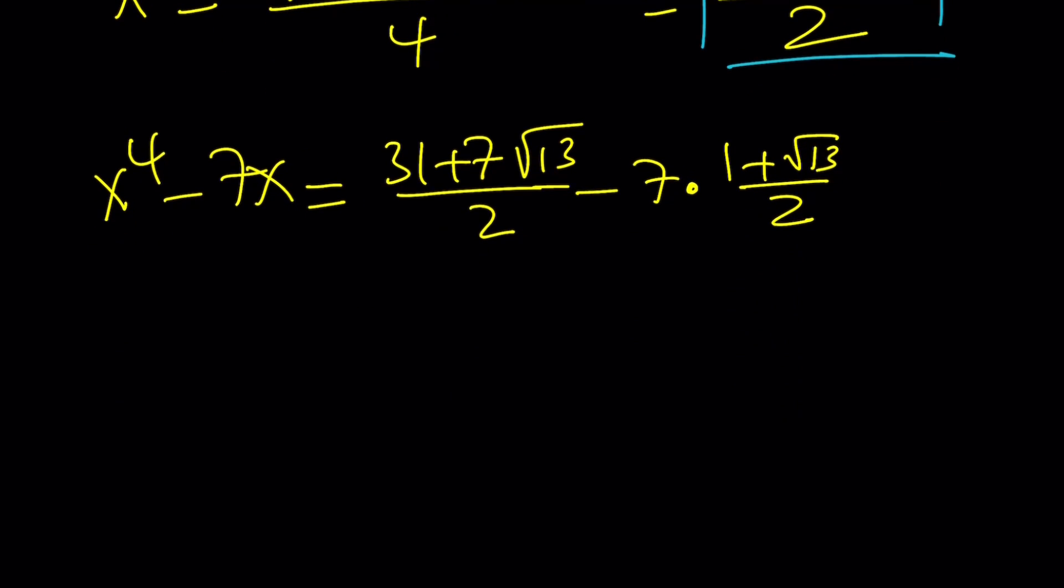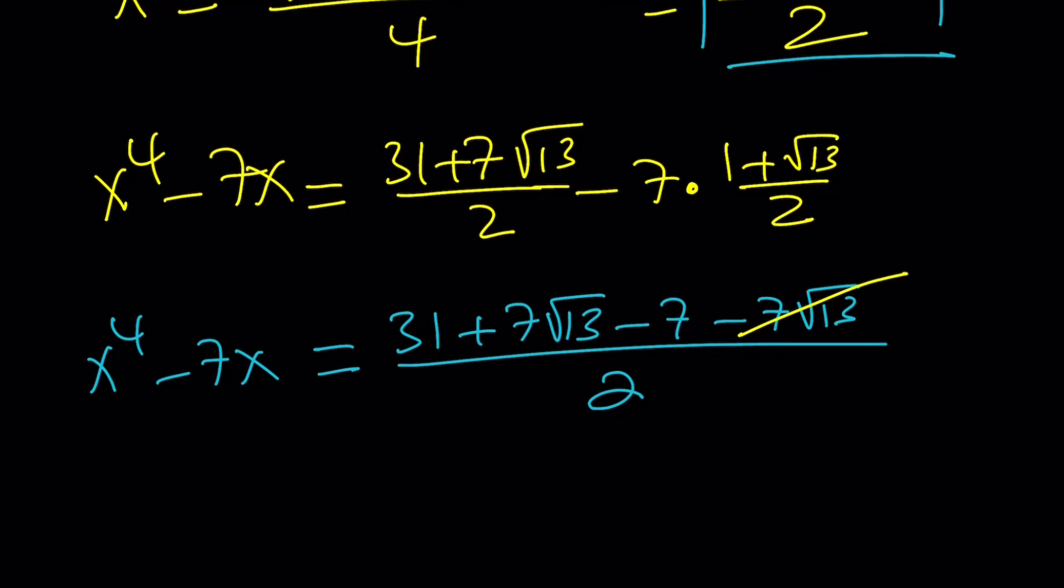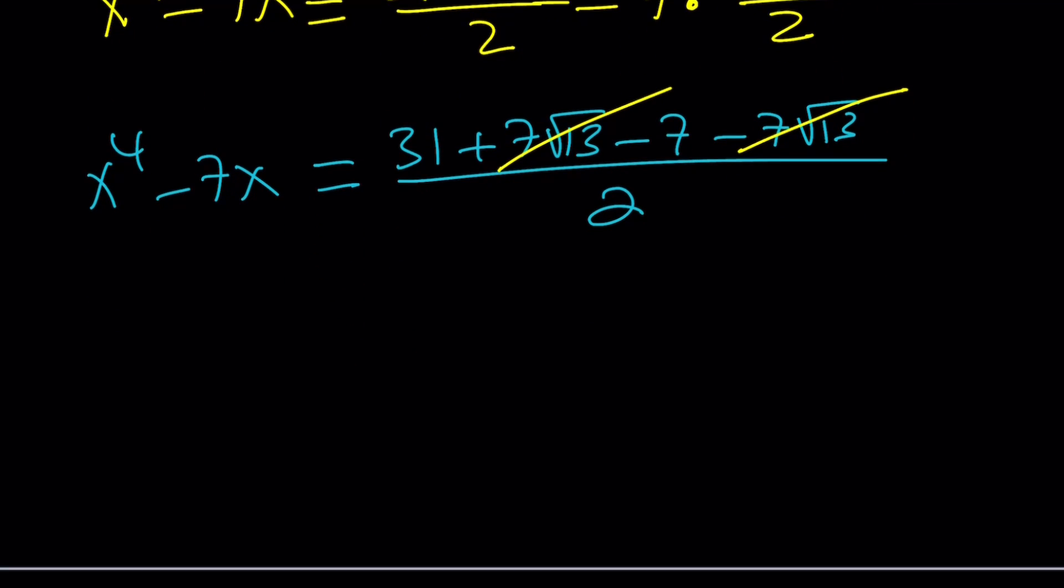Let's go ahead and distribute the negative 7. Notice that the expression, the second expression is going to be negated minus 7 minus 7 root 13 all over 2. This is x to the 4th minus 7x, which is what I'm trying to get at. Notice that 7 root 13 and minus 7 root 13 cancel out. 31 minus 7 is 24 and 24 divided by 2 is 12. Therefore, this expression is equal to 12.